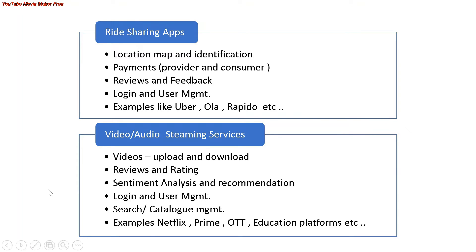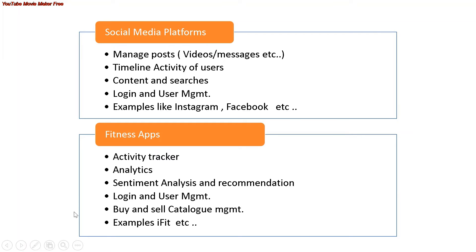Having an end-to-end idea of what you want to build helps you fit into the architecture more easily. For social media platforms like Instagram, Facebook, or Twitter, you can manage posts, timelines, user activity, content search, and login management as separate microservices. You can then run this project and scale services independently based on load.